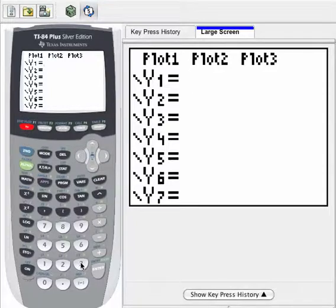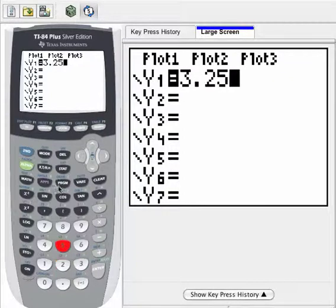So I'm going to enter 3.25, and then the X is right here, plus 30.